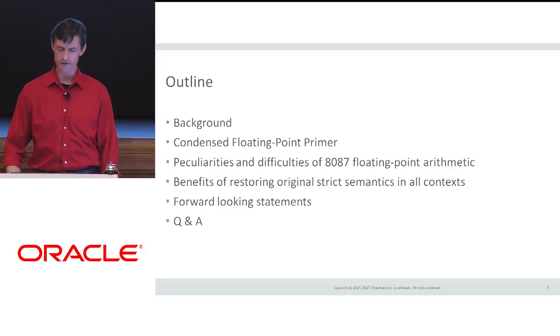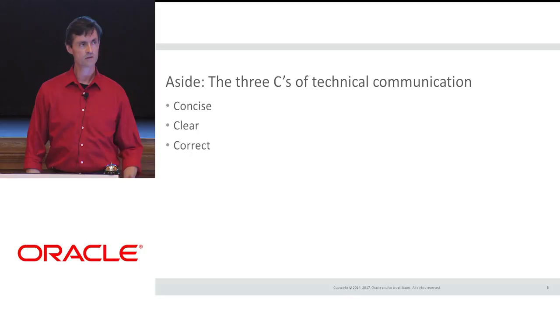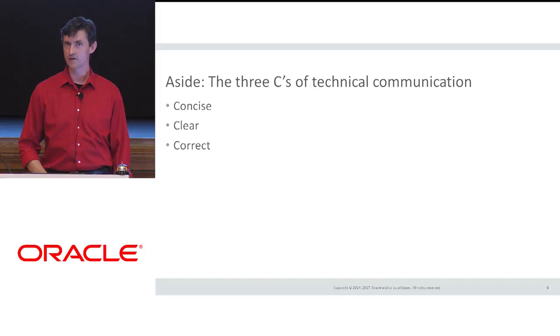I think there are three Cs of technical communication. Ideally you can be simultaneously concise, clear, and correct. This is extra difficult with floating-point because of the number of special cases, so sometimes conciseness will have to be sacrificed for accuracy.